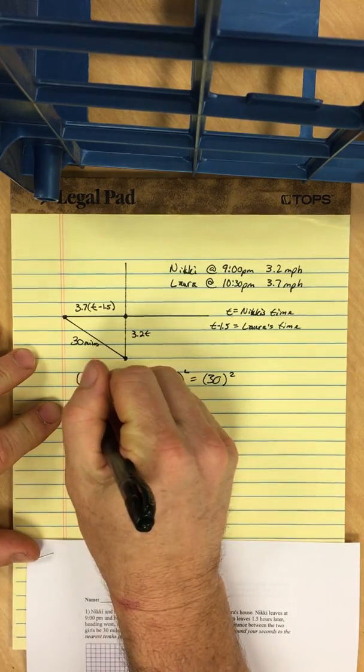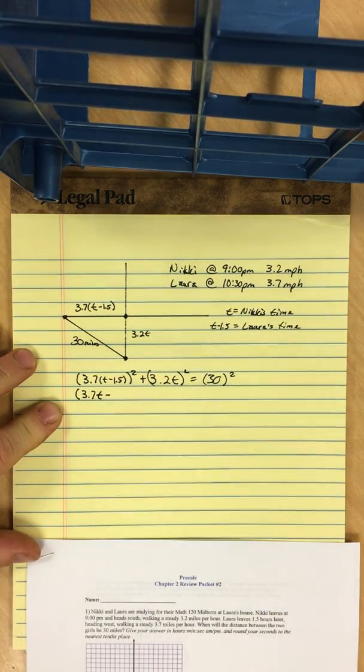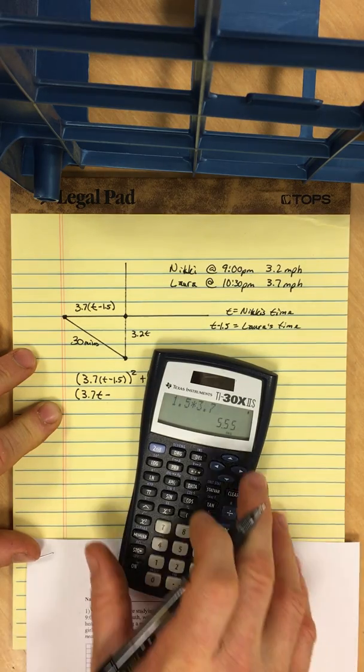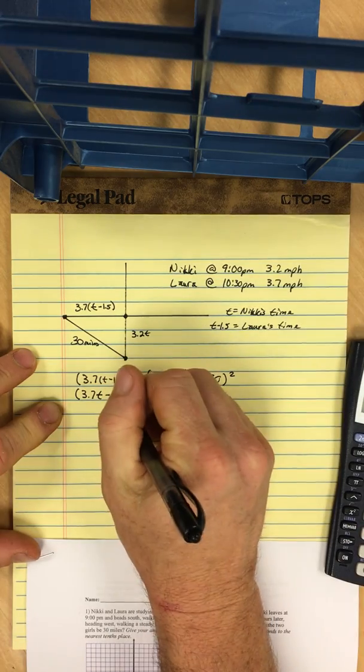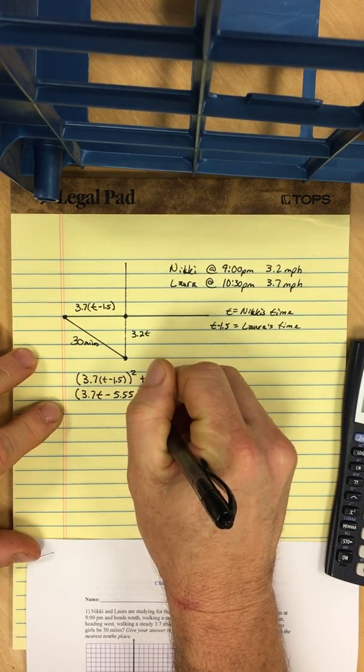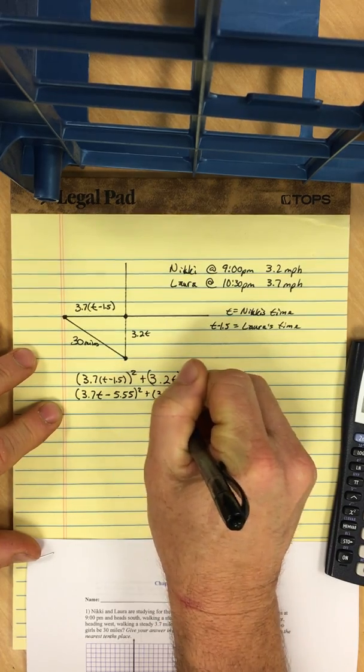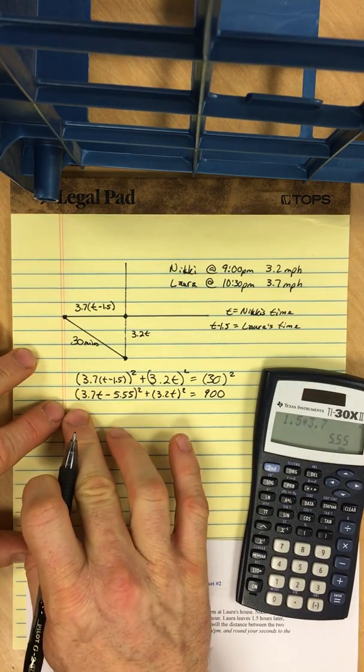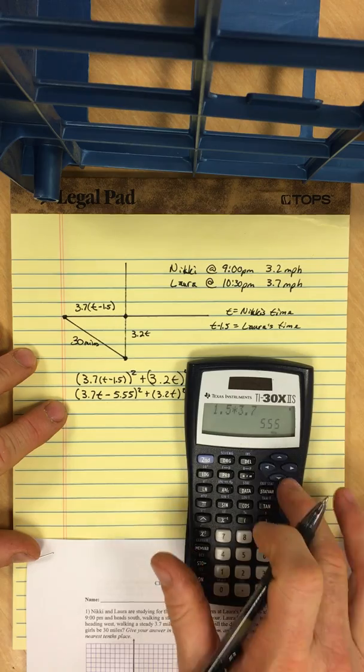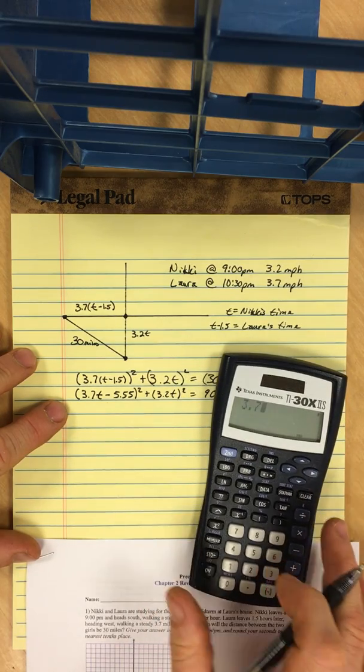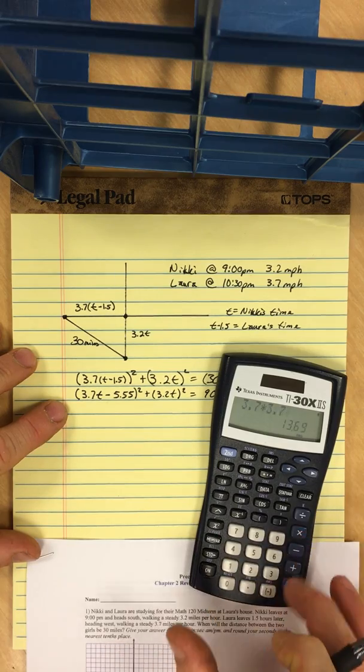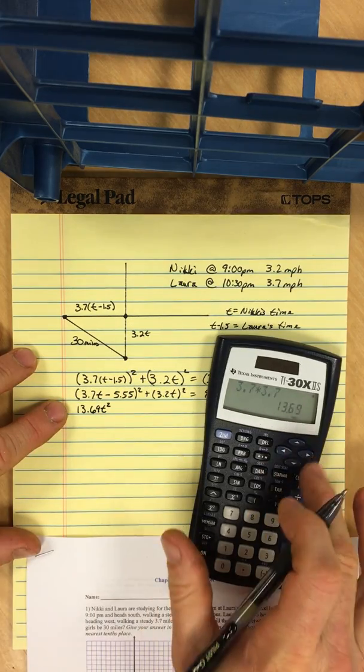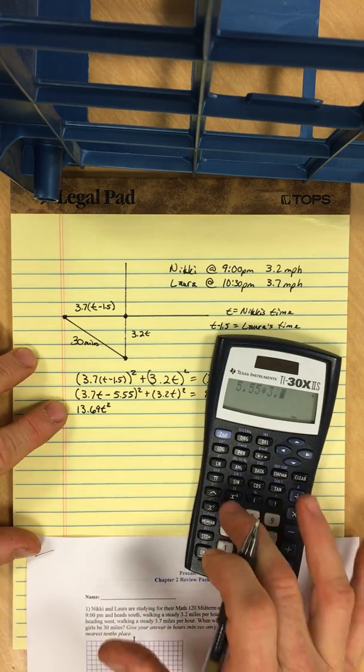So let's distribute this 3.7 in. And then we have 3.7t minus 1.5 times 3.7. 1.5 times 3.7 is 5.55. So minus 5.55 squared plus 3.2t squared equals 900. So I need to square this, which is a squared minus double ab plus b squared.